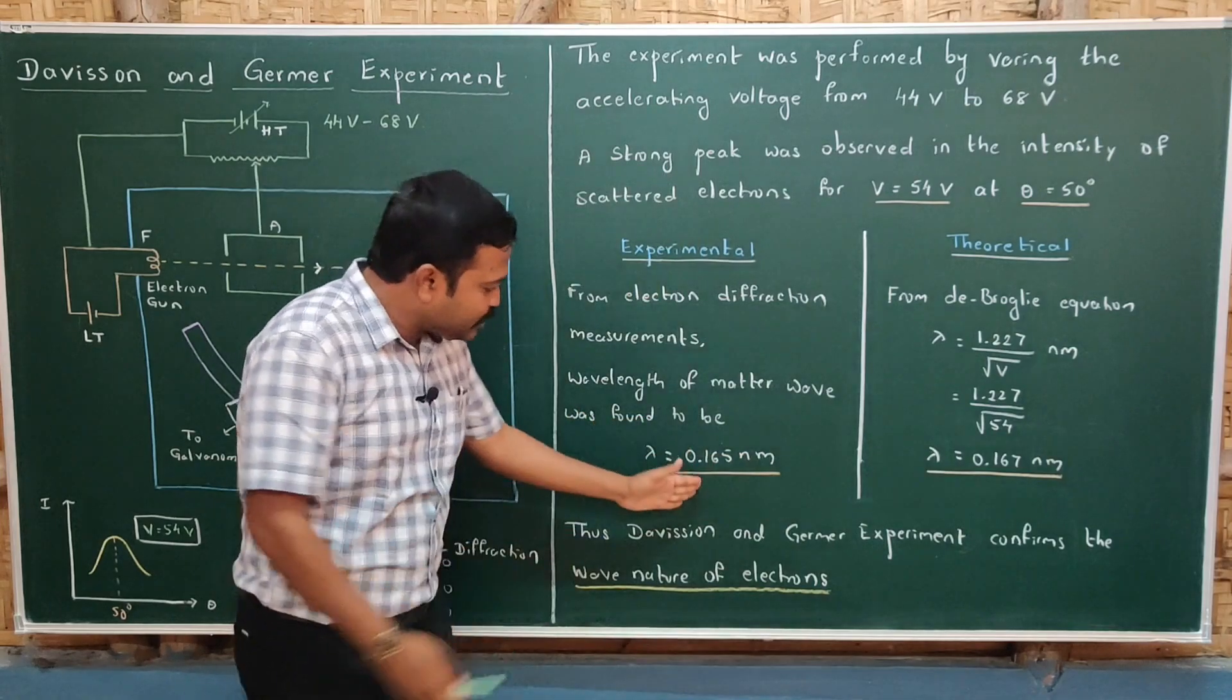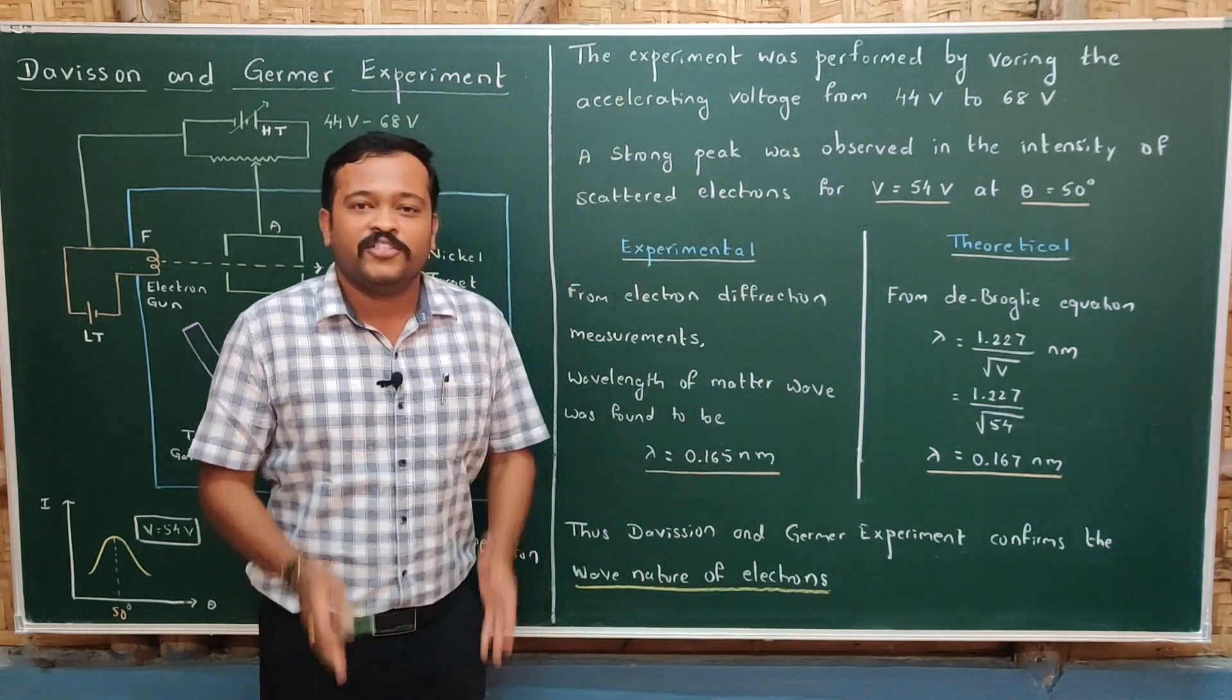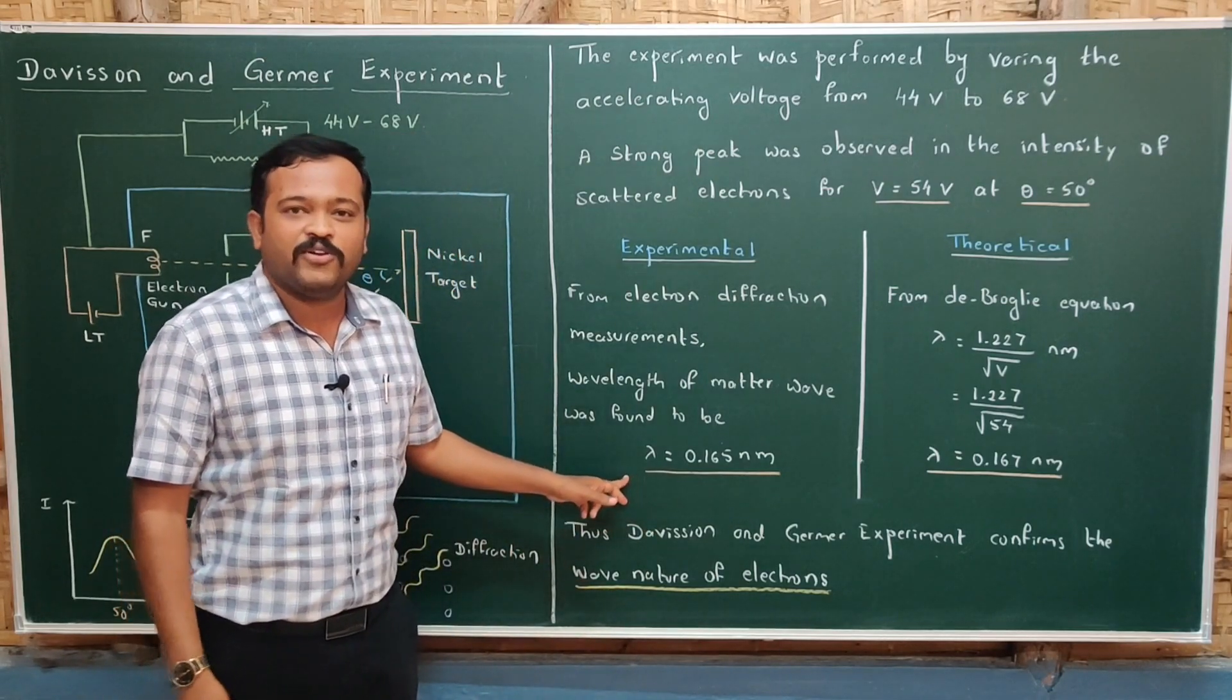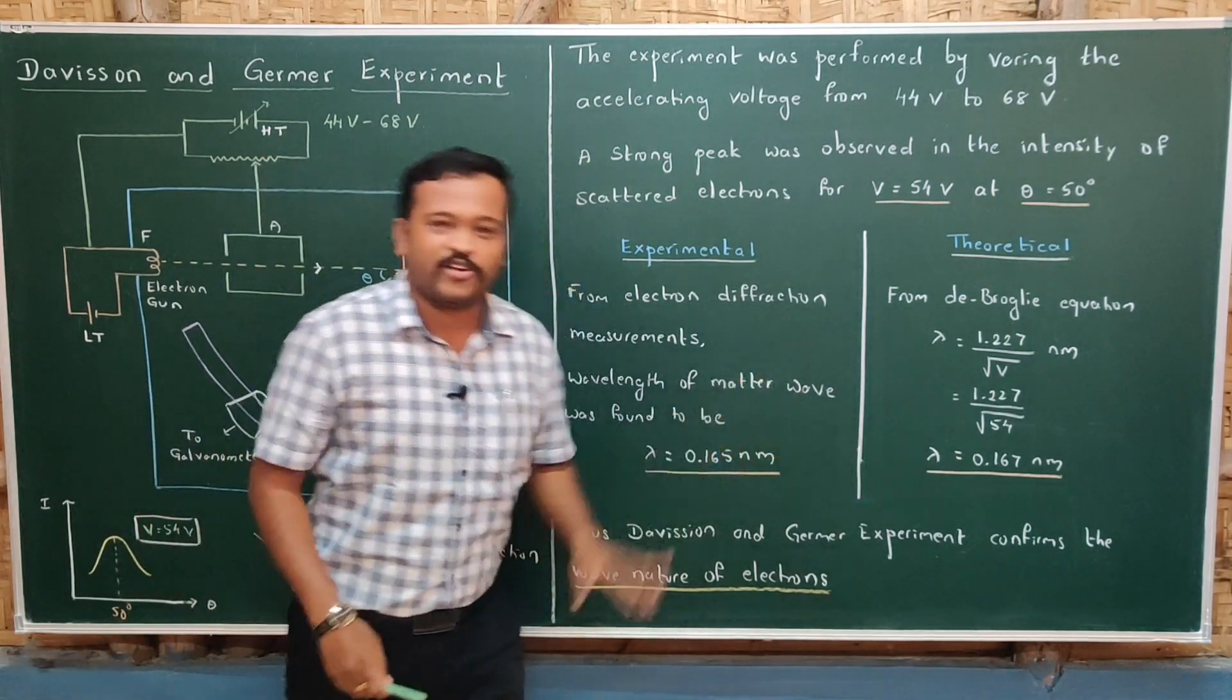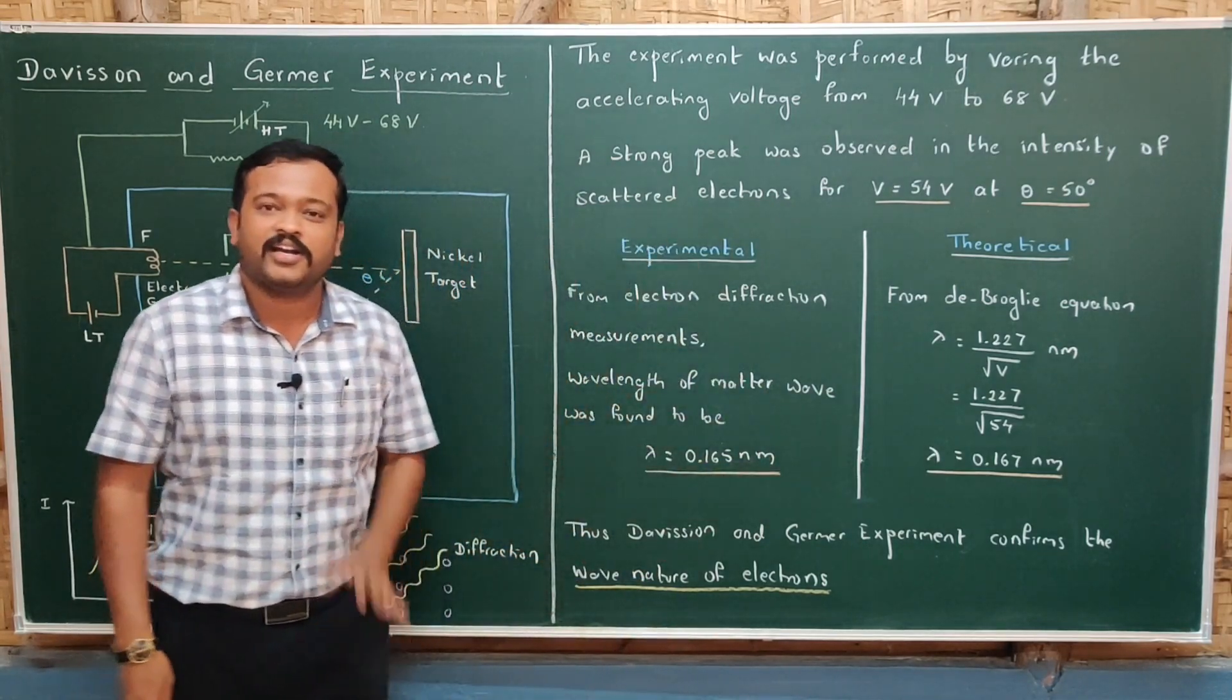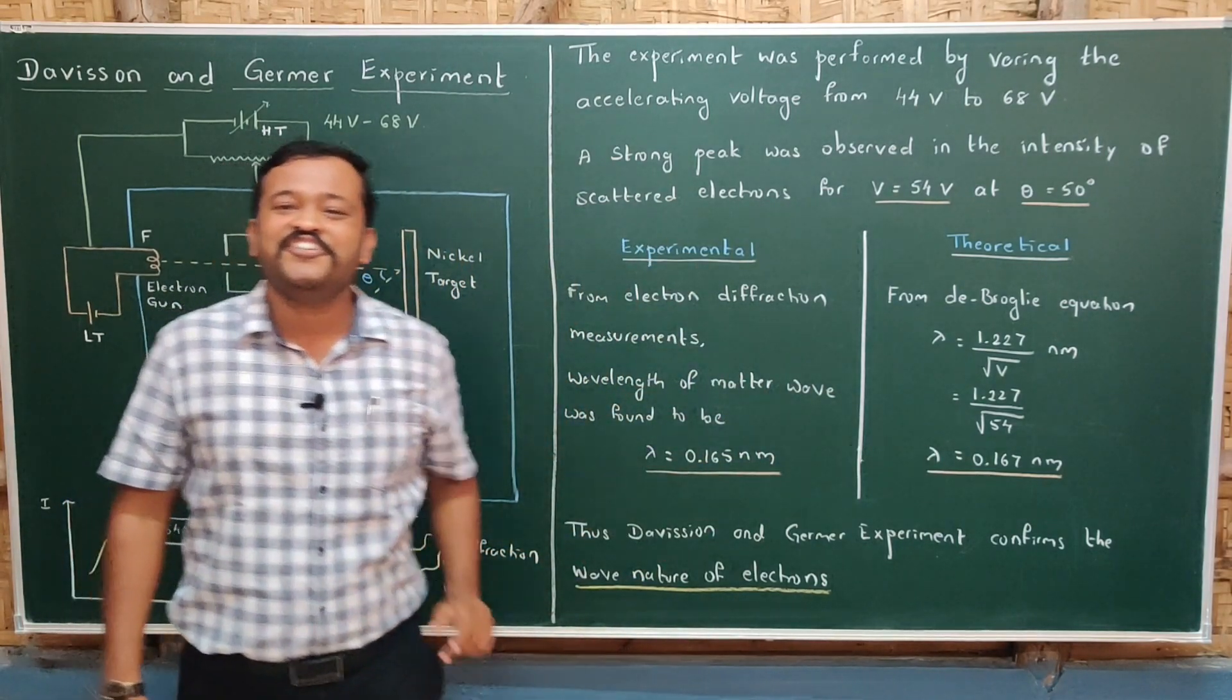If we compare the experimental value and theoretical value, they are nearly the same. The experimental value is in good agreement with the theoretical value. Thus, we can conclude that the Davisson and Germer experiment confirmed the wave nature of electrons.